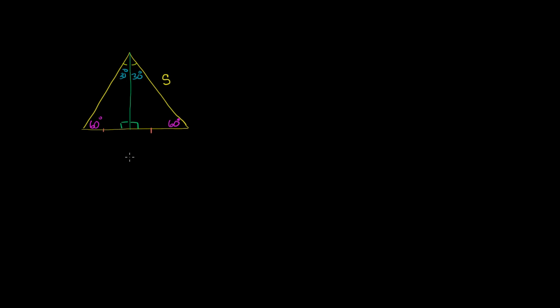We showed all of this more rigorously in that 30-60-90 triangle video. But what this tells us is, if this entire length was s — because all three sides are going to be s, it's an equilateral triangle — then each of these parts right over here is going to be s over 2.